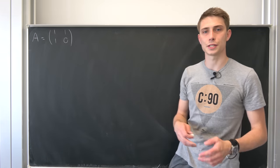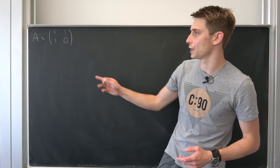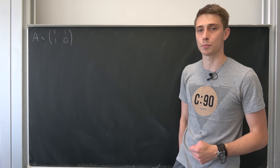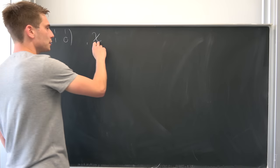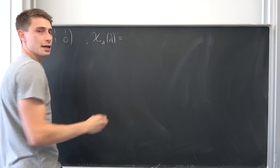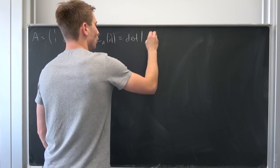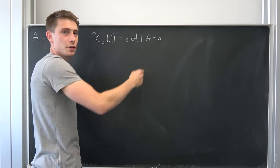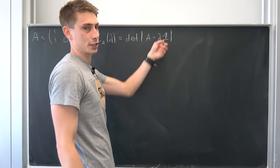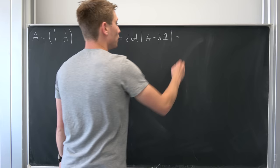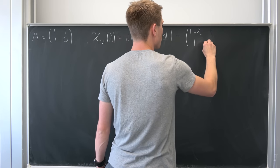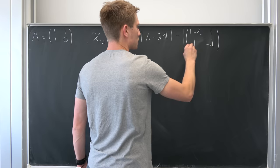In order for us to find out matrix S, we have to find the eigenvectors of A, and we are going to do this using the characteristic polynomial. The characteristic polynomial is denoted chi of A with lambdas, and it's just the determinant of A minus lambda times the identity matrix. So if we compute that, we are going to end up with the matrix [[1-lambda, 1],[1, -lambda]] and then take its determinant.